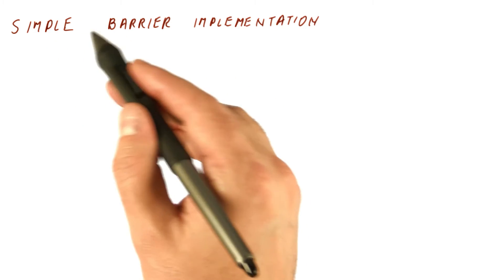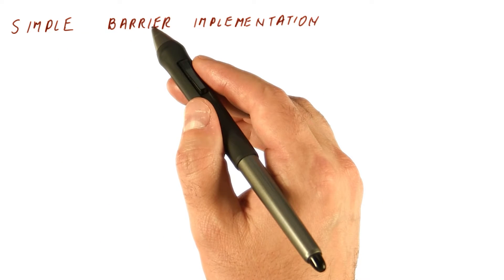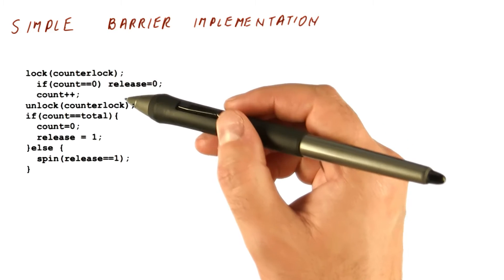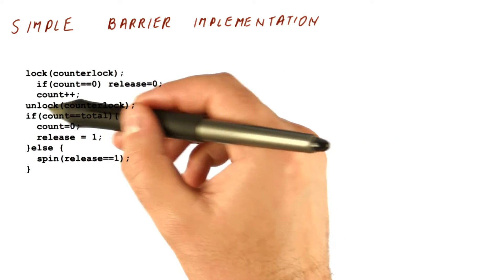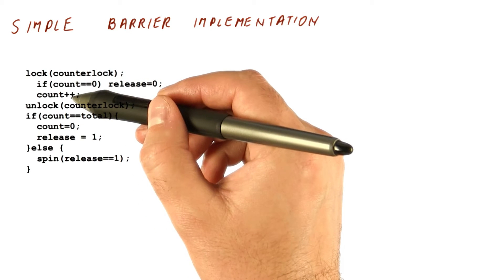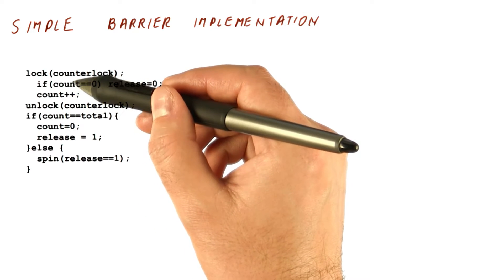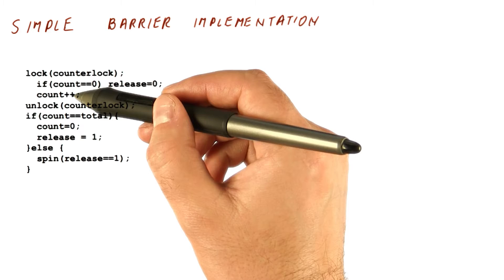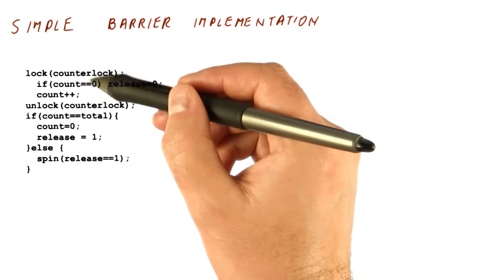Let's look at a relatively simple implementation of a barrier in a program. This is our barrier implementation. Our counter is a shared variable, and everybody's trying to increment it when they arrive to the barrier. Multiple threads could arrive to the barrier at about the same time, so we have to protect the counter using a lock.